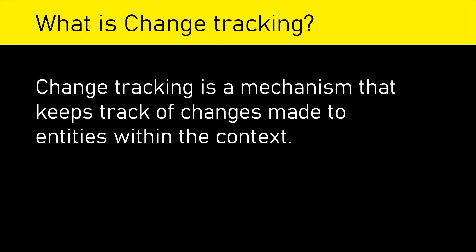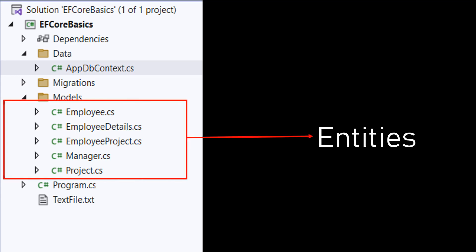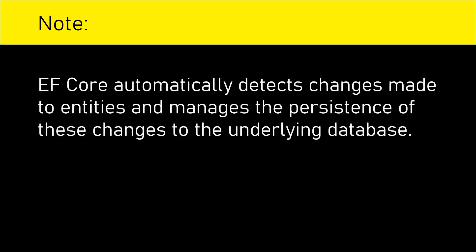Change tracking is a mechanism that keeps track of changes made to entities within the context. In our example, AppDbContext is a derived class of DbContext, and it represents the database context and provides access to different DbSet properties that represent the database tables. In our application, Employee, EmployeeDetails, EmployeeProject, Manager, and Project are the entities, and these entities are associated with their corresponding tables in the database. Entity Framework Core automatically detects the changes made to entities and manages the persistence of these changes to the underlying database.